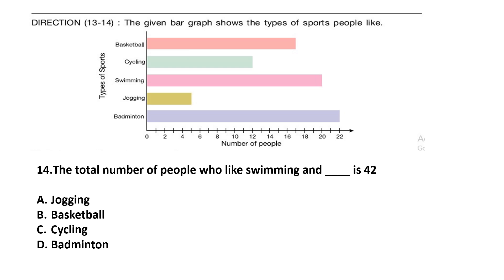Using the same bar graph, Question number 14. The total number of people who like swimming and a certain sport is 42. Total 20 people like swimming. And 42 minus 20 is 22. So, 22 people like badminton. The answer is Option D — Badminton. Total people who like swimming and badminton is 42.